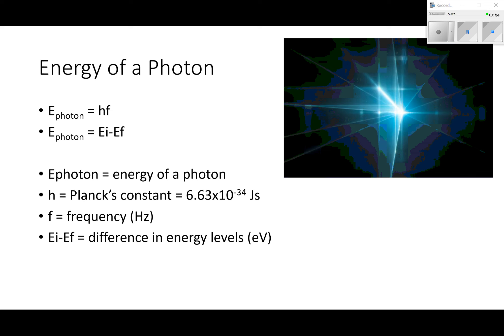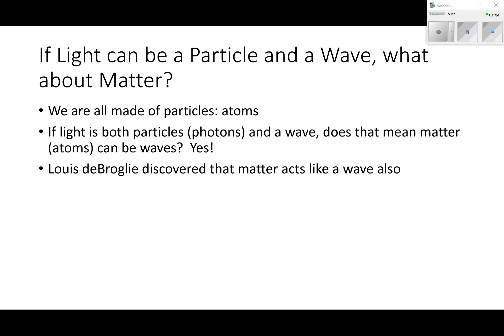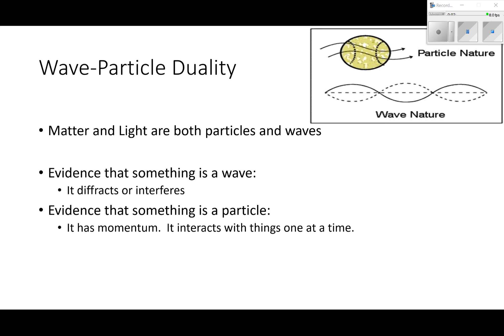So if light can be a particle and a wave, what about matter? We know that matter is made of particles - atoms. You guys know all about atoms. If light is both particles, photons, and a wave, does that mean matter can also be waves? And the answer is yes. Louis de Broglie discovered that matter acts like a wave also. So you can get waves from matter. This is known as wave-particle duality. Matter and light are both particles and waves.